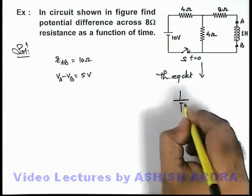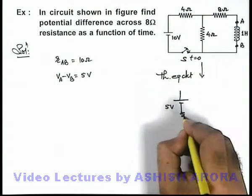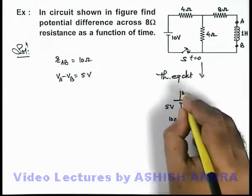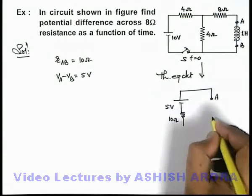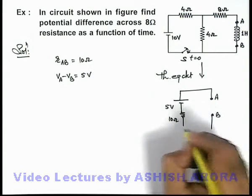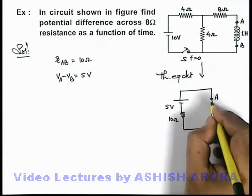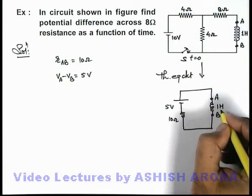So here the Thevenin equivalent circuit we can write as a 5 volt battery along with a 10 ohm resistance, and we can reconnect the inductor of 1 henry which is connected across the terminals A and B.